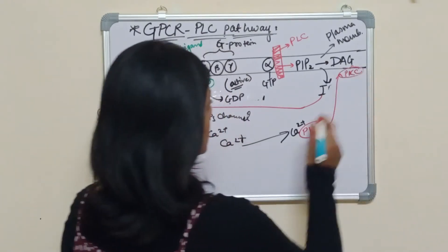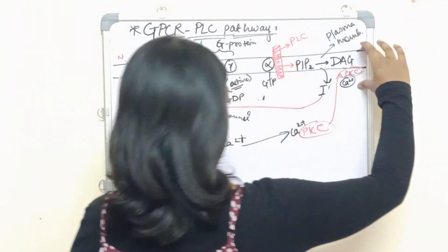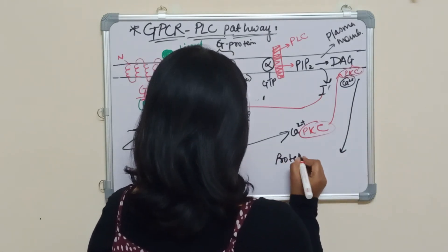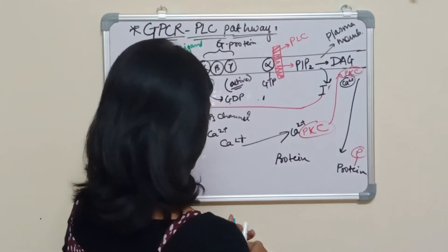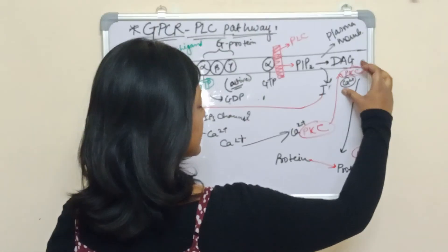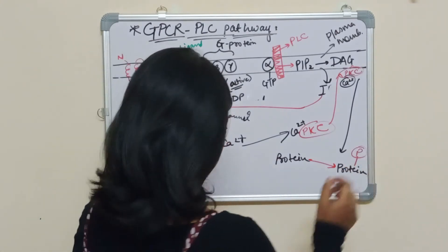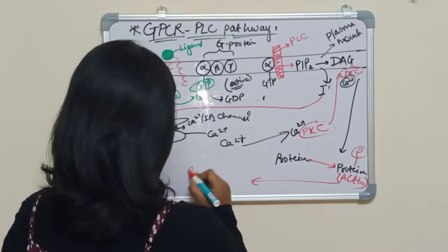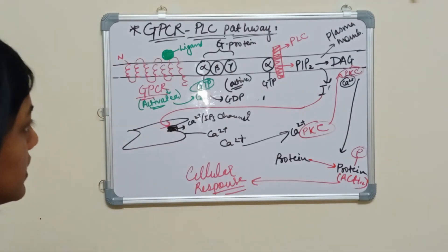When PKC combines with DAG and calcium at the plasma membrane, PKC gets activated. Since PKC is a kinase, it can phosphorylate protein — it adds a phosphate group to any protein. The phosphorylated protein becomes active, and this active protein shows a cellular response. This is another pathway.